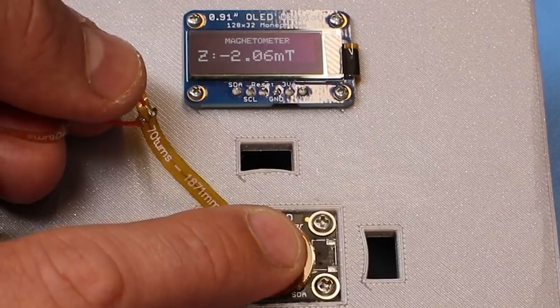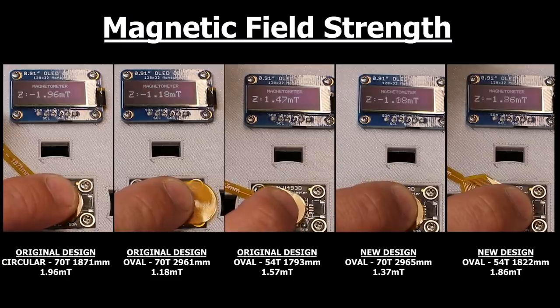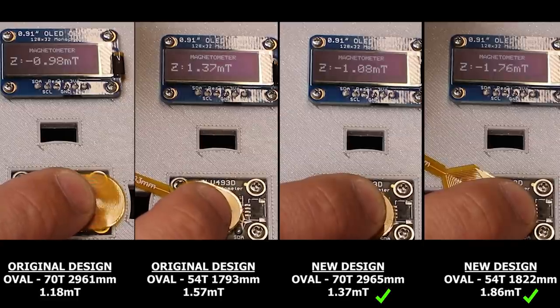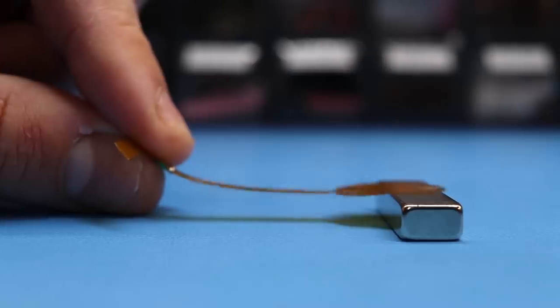Then I tested their magnetic flux density and to my surprise the original version still had the largest value. However, when comparing the oval shapes the new topology had slightly higher strength. Needless to say all the coils got attracted to the magnet and had the same flappy motion.